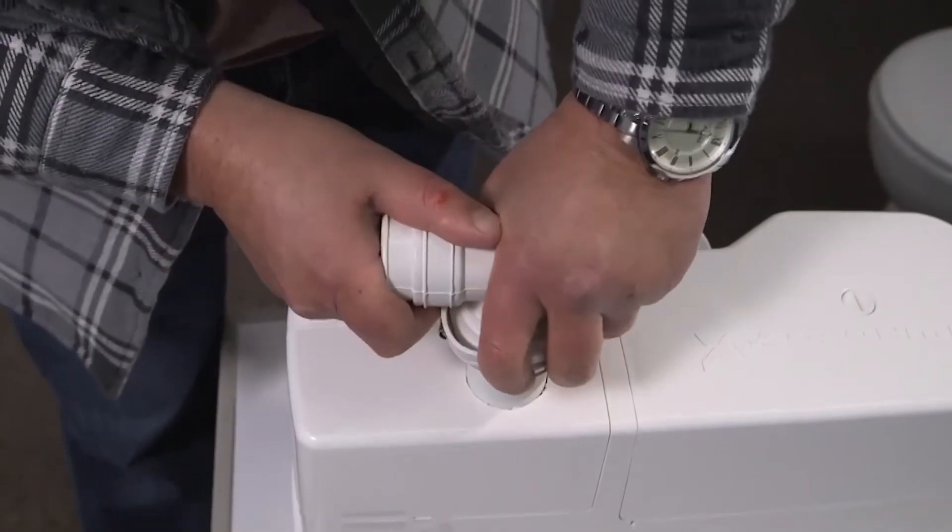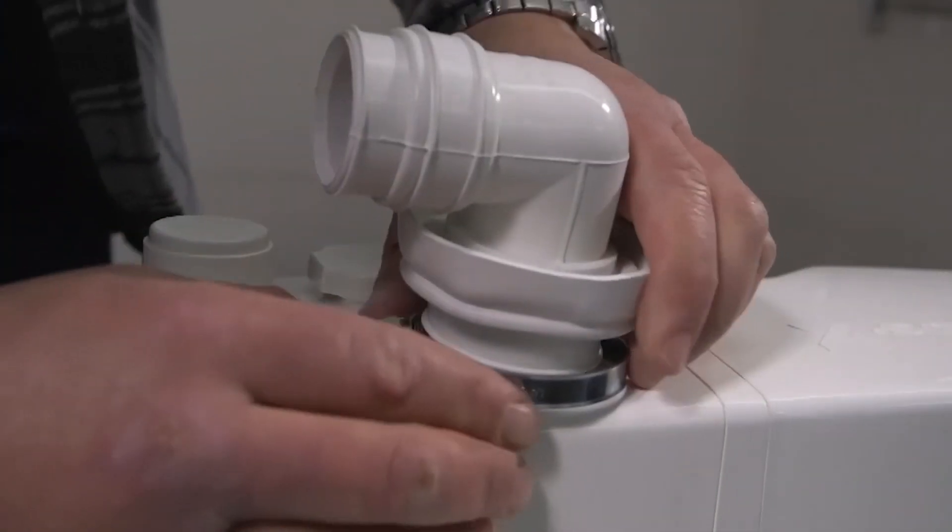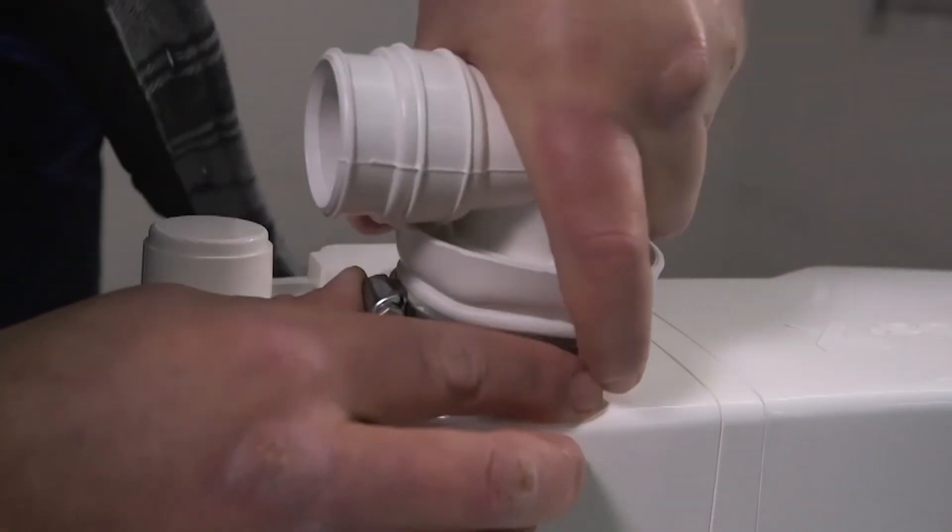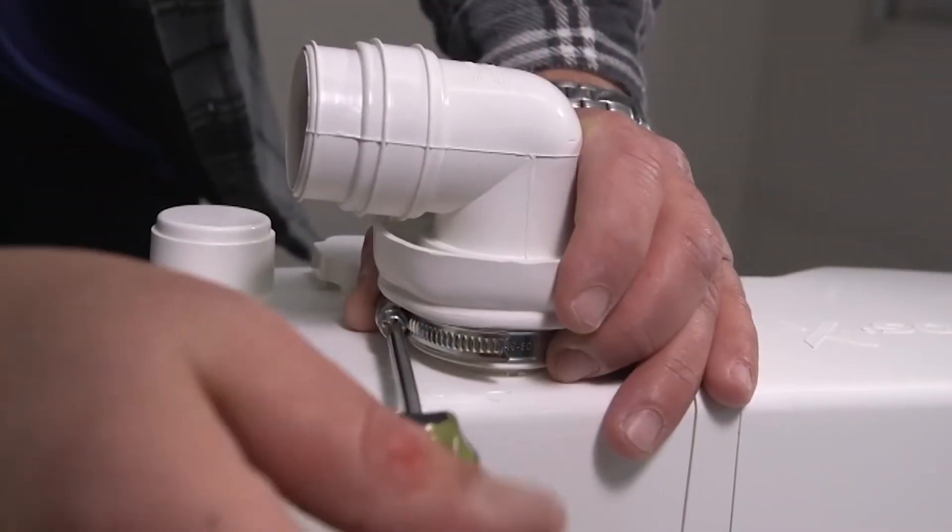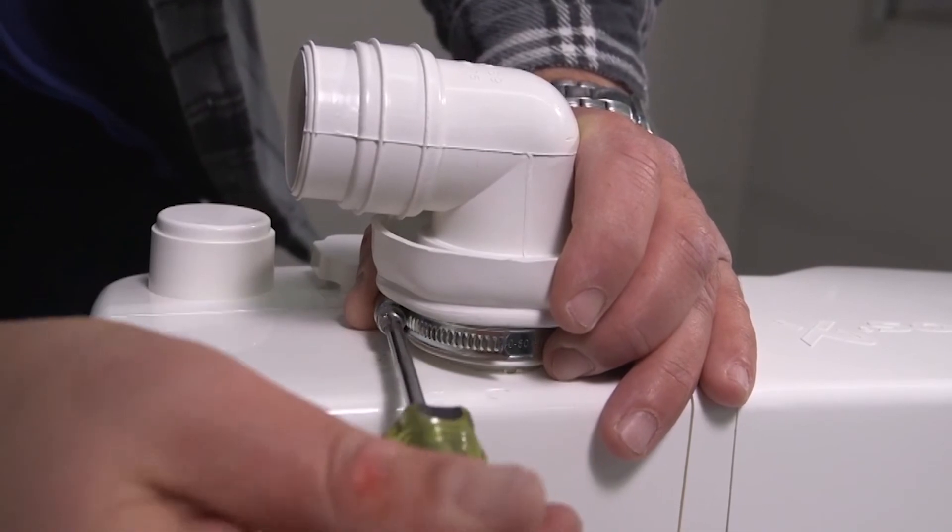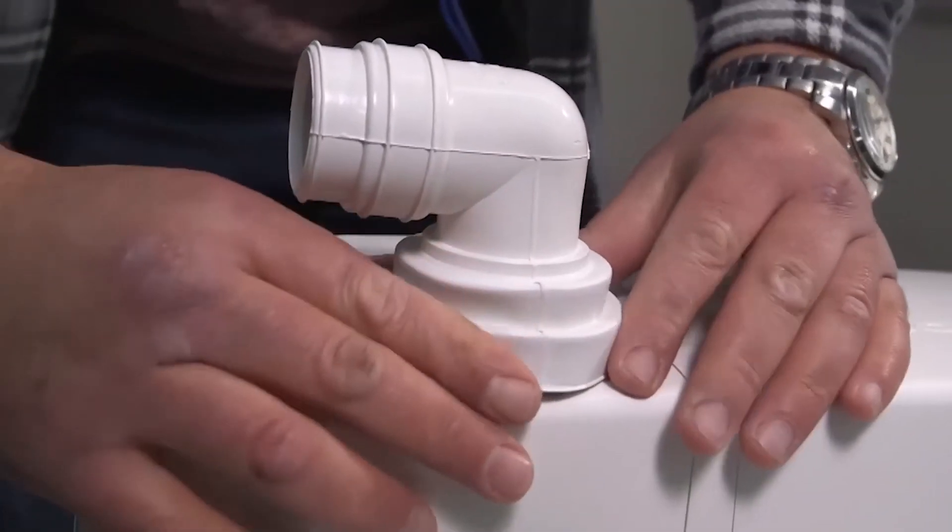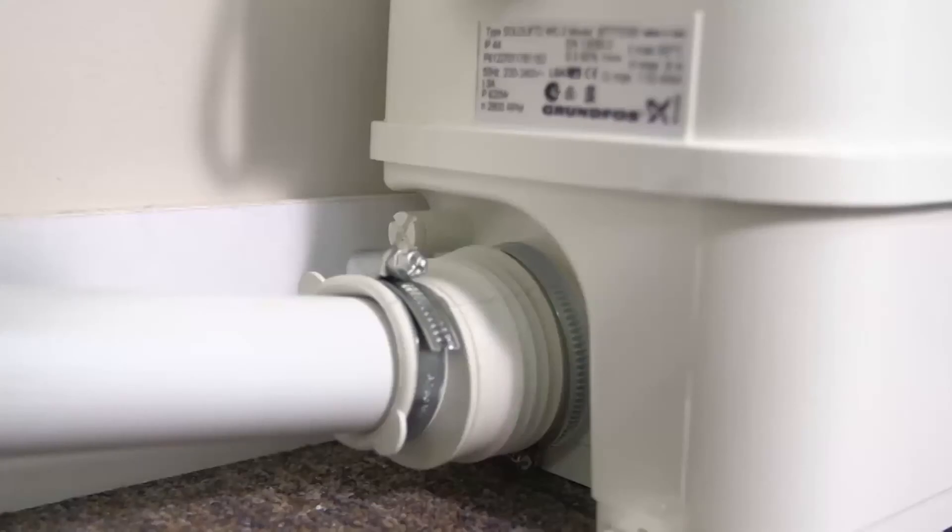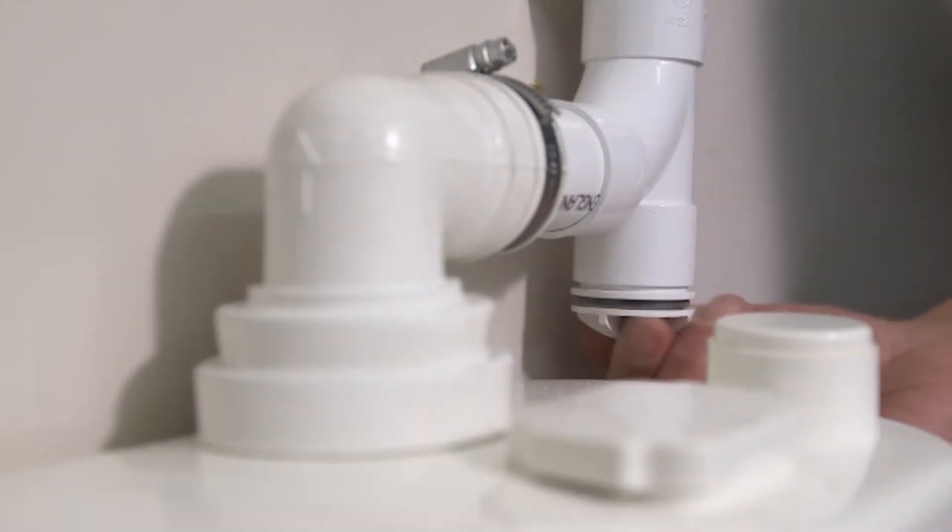Push on the outlet connection elbow, again using soapy water if required. Tighten the jubilee clip and pull over the secondary seal cover. Connect the pipes to the unit and remember to fit the drain plug.